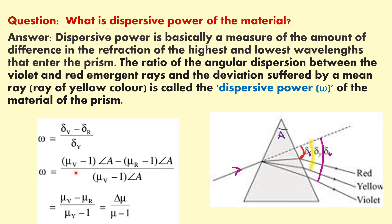Delta is related to mu as: (mu V minus 1) times A minus (mu R minus 1) times A, divided by (mu Y minus 1) times A. The angle A cancels out, so omega equals (mu V minus mu R) divided by (mu Y minus 1). Delta R is for red color, delta Y is for yellow, and delta V is for violet color.